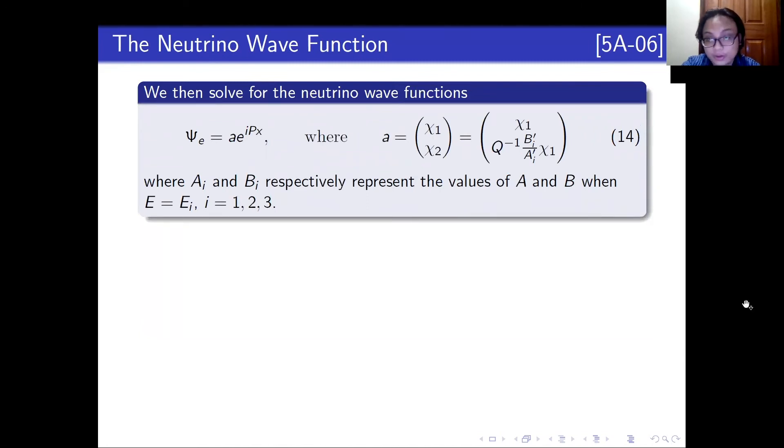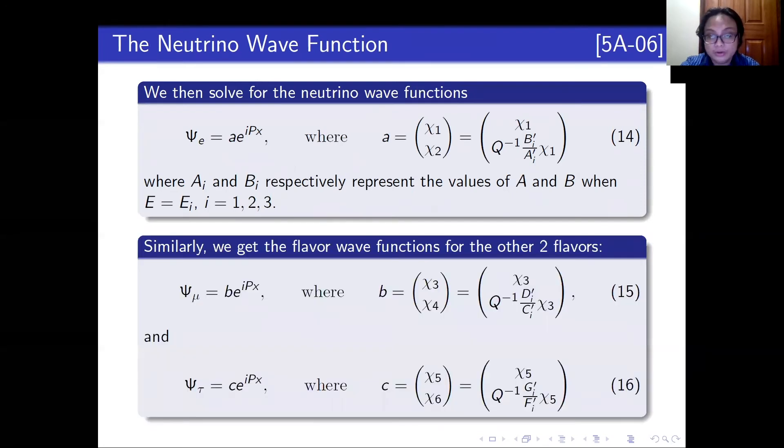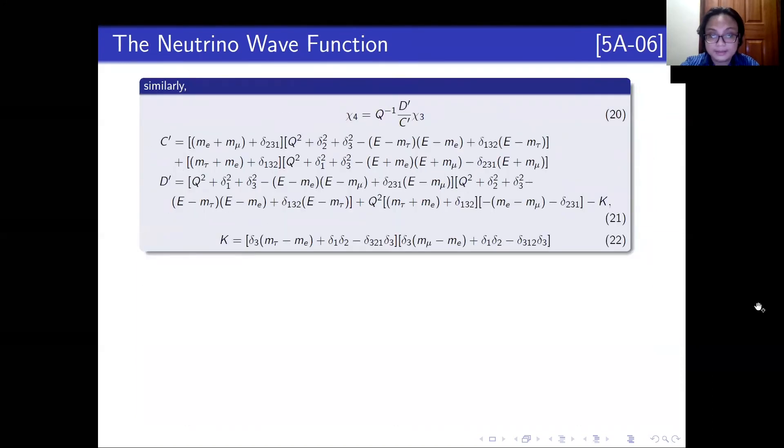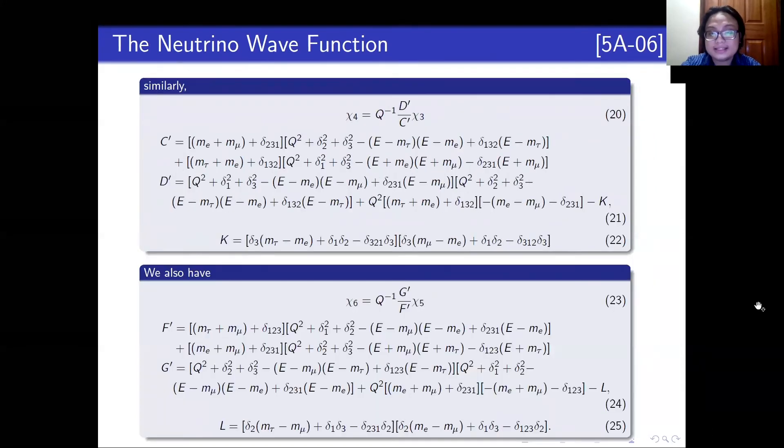Next would be solving for the neutrino wave functions. For the electron neutrino wave functions, we solve for χ₂ in terms of χ₁. For the mu, χ₄ in terms of χ₃. And for the tau, χ₆ in terms of χ₅. This is χ₂, this is χ₄, and this is χ₆.